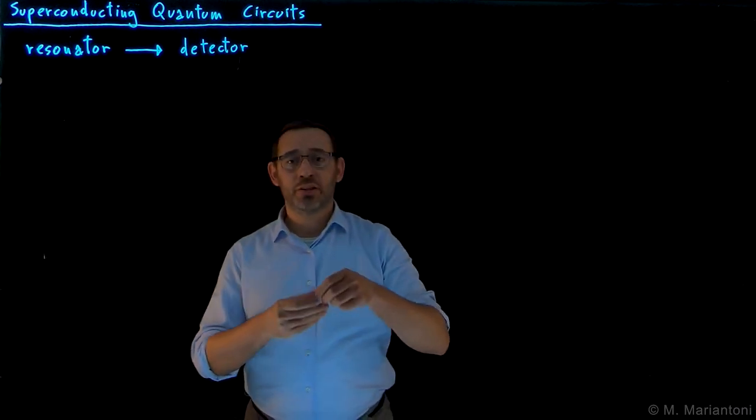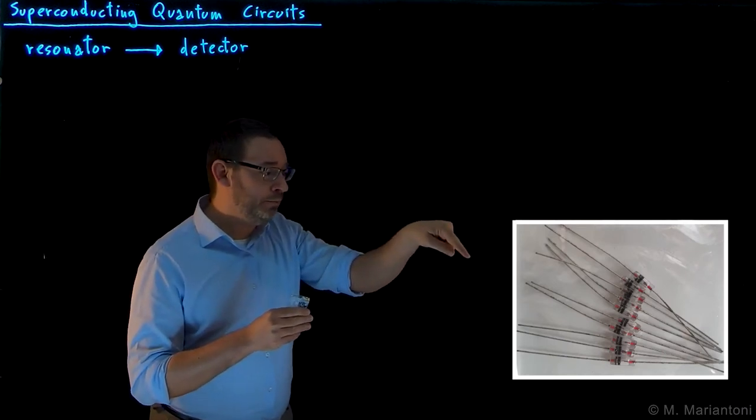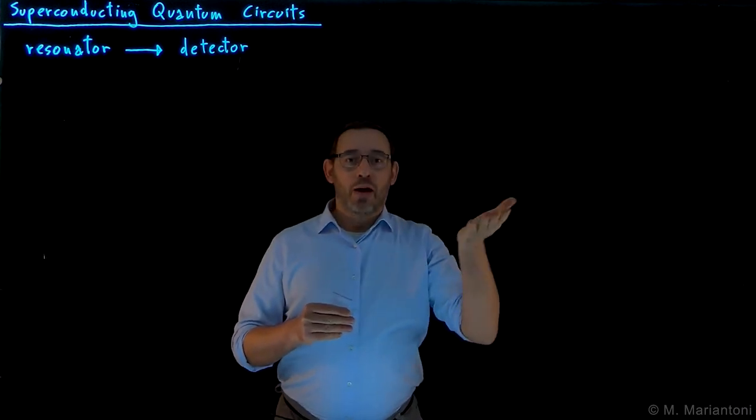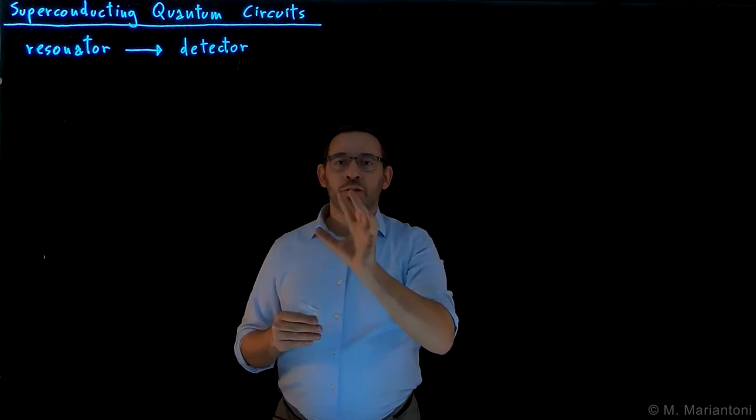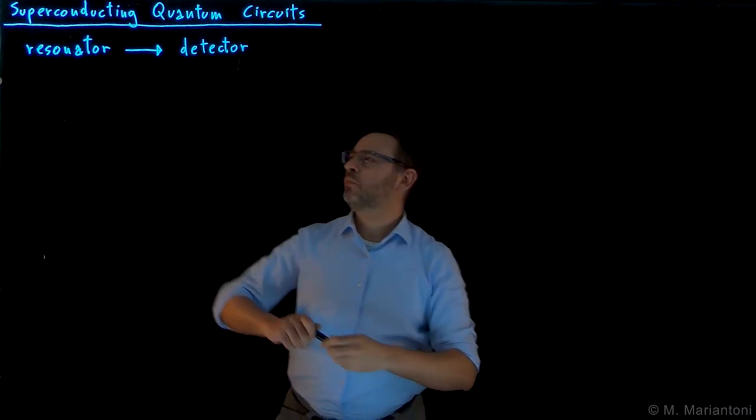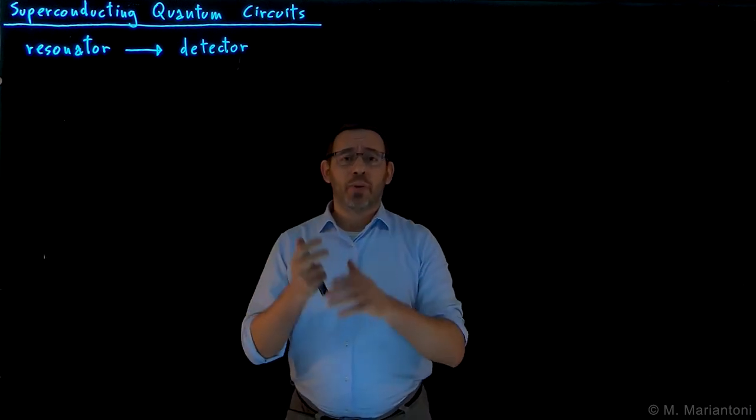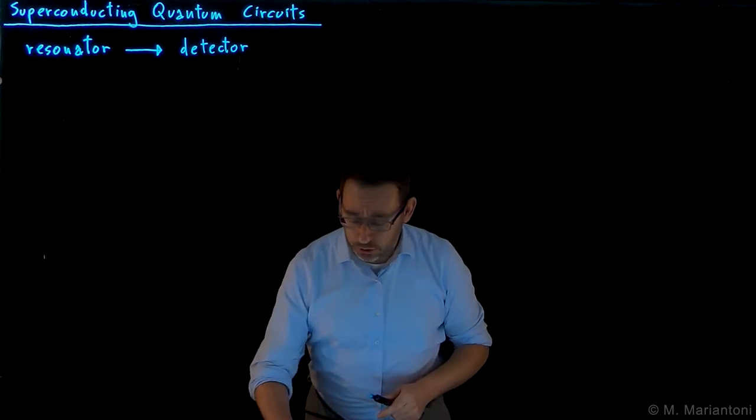Detectors in AM radios are based on diodes, like the one you can see in the picture here. I will discuss a little bit more about detectors in the screencast which will follow this video. How can we make a resonator? One way to make a resonator is by connecting in parallel an inductor L with a capacitor C.